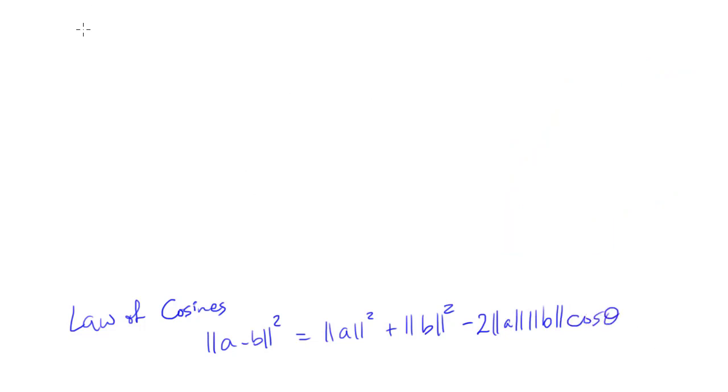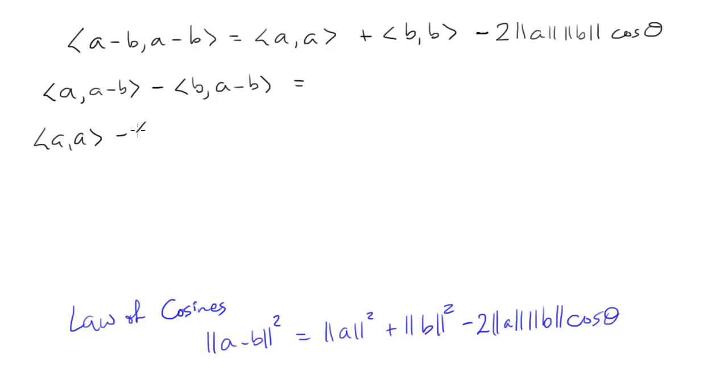Definition of the norm. Inner product with itself. Inner product is linear in each component. And distribute. We're in a real space. So a, b, and b, a, inner product are the same. So I can collect those two terms together. The other two terms cancel the other side.